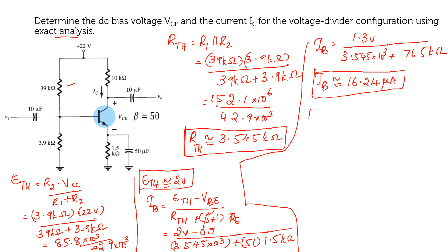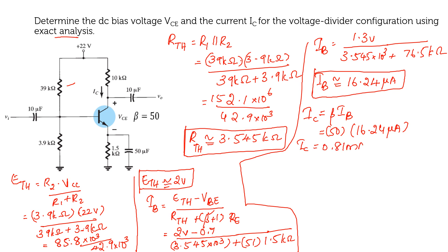Once you have found Ib, you can calculate Ic. Ic is equal to beta times Ib. Beta is 50, and Ib is 16.24 microamperes. Therefore, Ic is equal to 0.81 milliamperes.